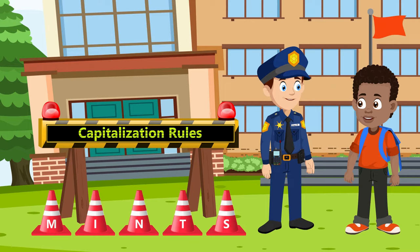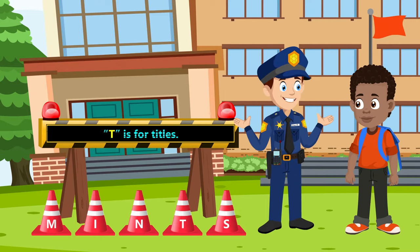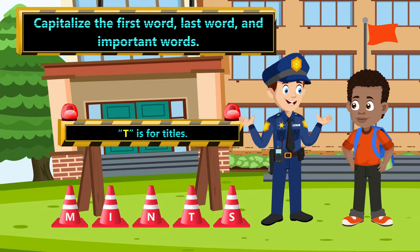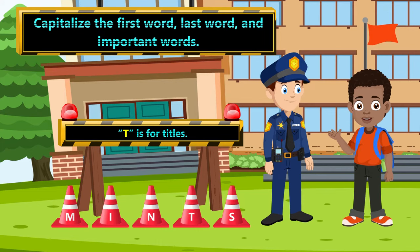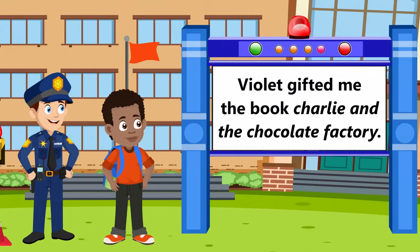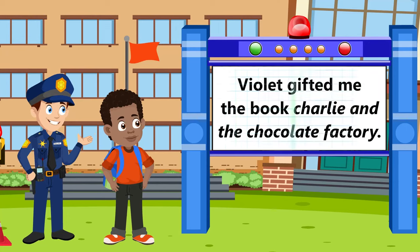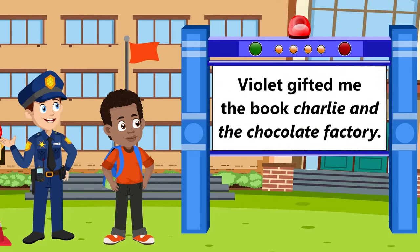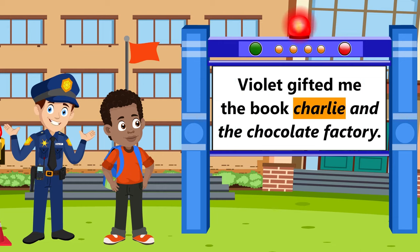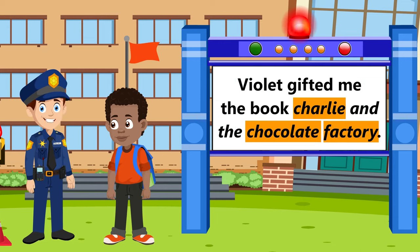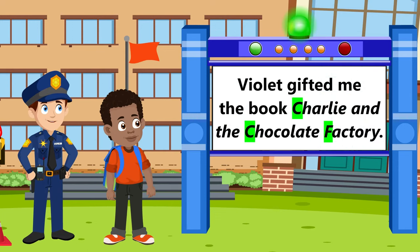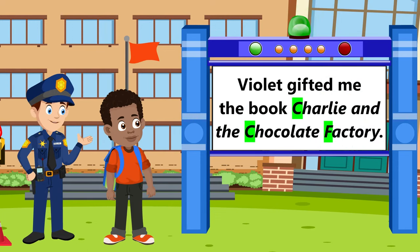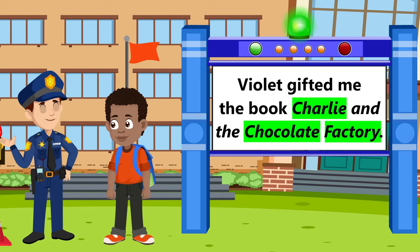What does T stand for? T is for titles. In titles of books, movies, etc., capitalize the first word, last word, and important words. That's our rule four. Look at this sentence: Violet gifted me the book Charlie and the Chocolate Factory. We must capitalize Charlie, Chocolate, and Factory. You should leave 'and' and 'the' uncapitalized. Our sentence should look like: Violet gifted me the book Charlie and the Chocolate Factory. That's perfect!